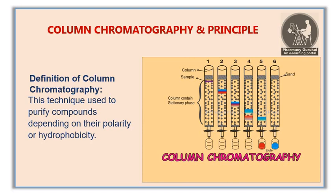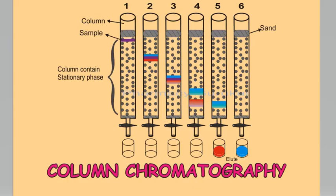On the basis of the sample or analyte, the stationary phase is decided, and mostly silica gel or alumina is used. For packing the column, first a cotton layer is put in, after which sand is introduced with a thickness of about one centimeter.